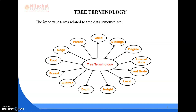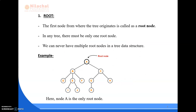Let's discuss each terminology one by one. First comes the root. The root is the first node from where the tree originates. In a tree there must be only one root node — we can never have multiple root nodes in a tree data structure. Here, A is the only root node.